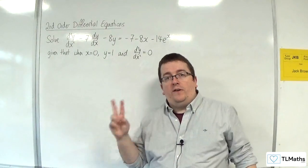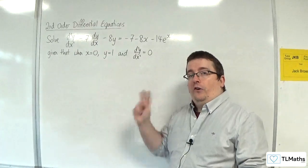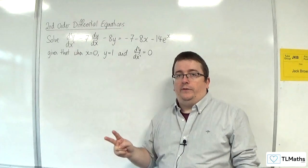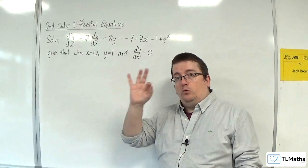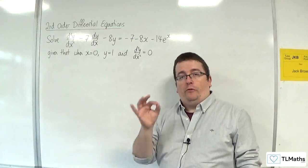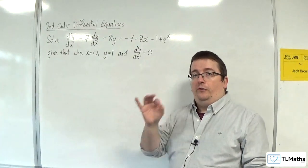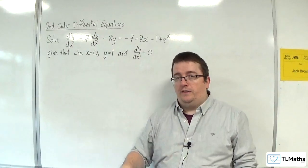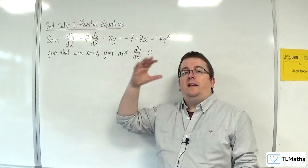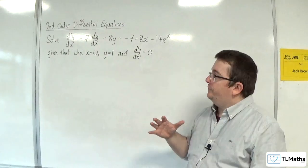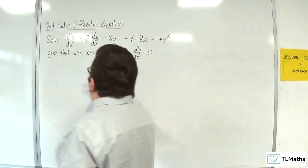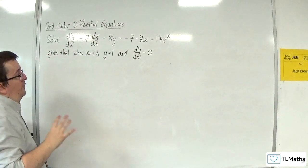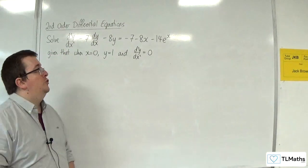So you need two bits of information to find your two constants. For every single constant value that you have in your general solution, those unknowns, you need a separate piece of information to find them. If you had three unknowns, you would need three bits of information. So we've got the correct number of bits of information to solve this and find our particular solution.